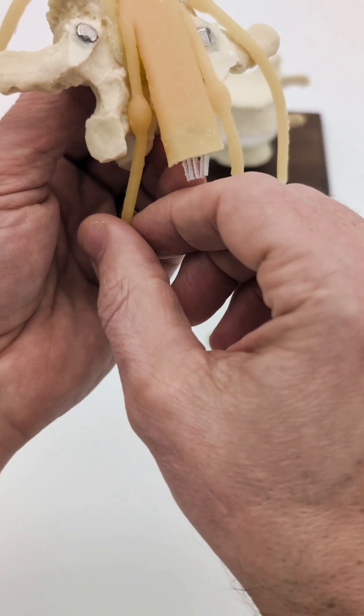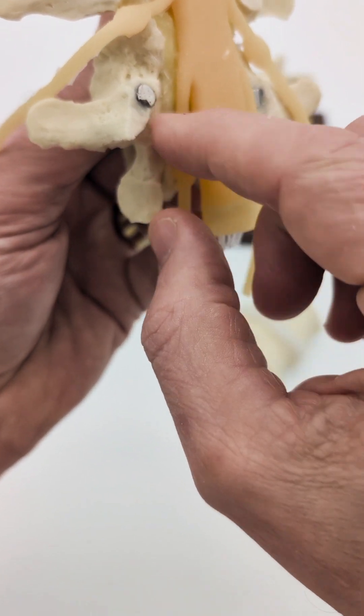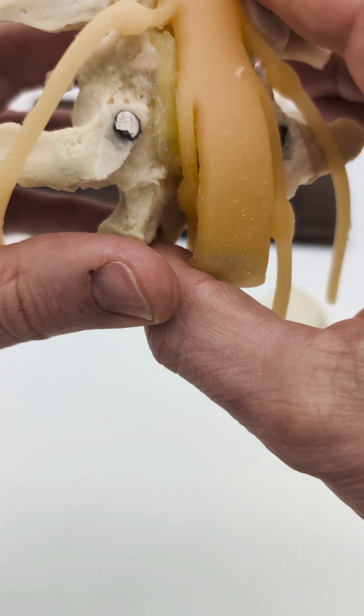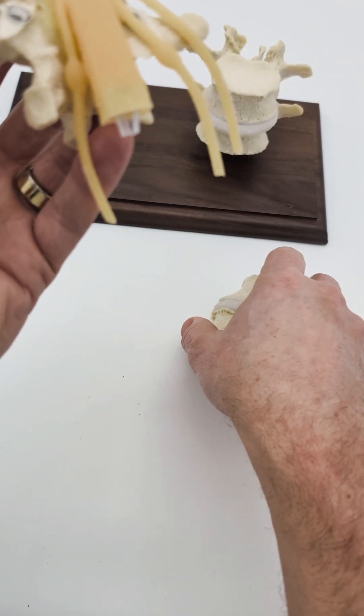And then this nerve root, L4, is being sandwiched between this thickened ligamentum flavum and also the adjacent disc.